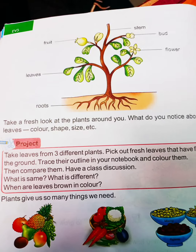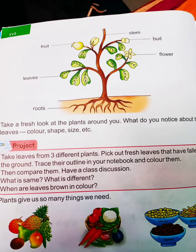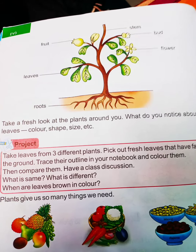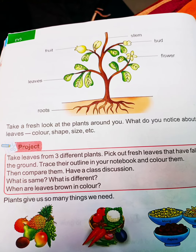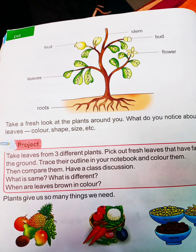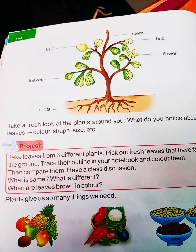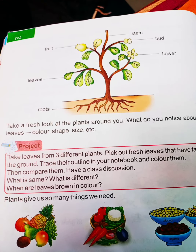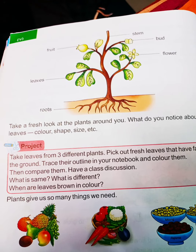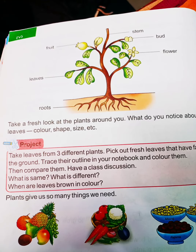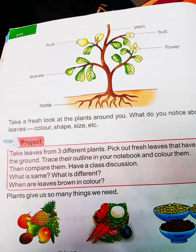Now let's learn a nice song. Repeat after me: 'In the heart of a seed, buried deep so deep, a tiny plant lay fast asleep. Awake said the sunshine, and creep to the light, awake said the voice of the raindrops bright. The little plant heard and it rose to see, what a wonderful outside world might be.'